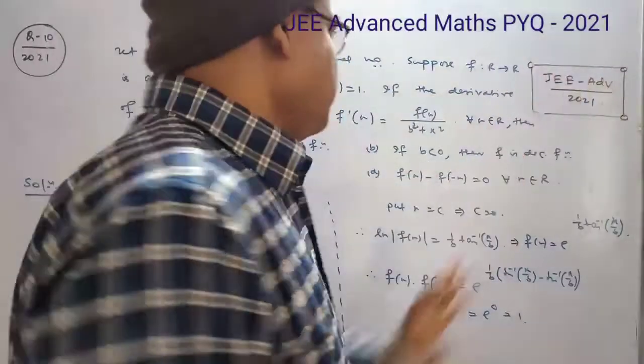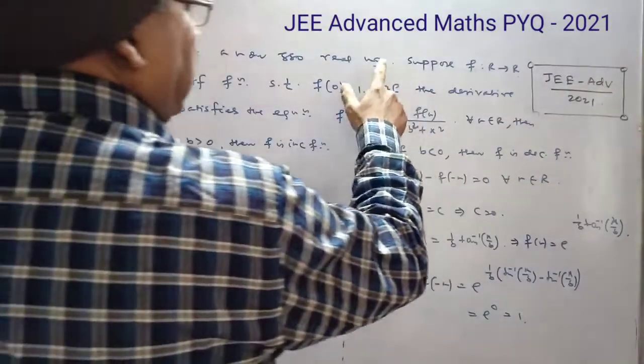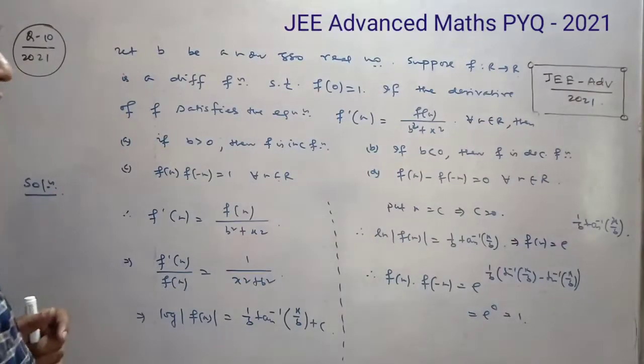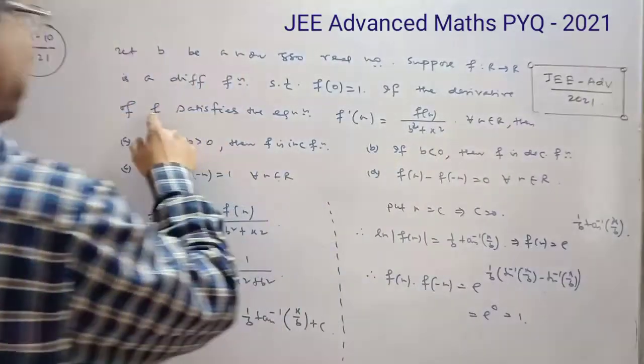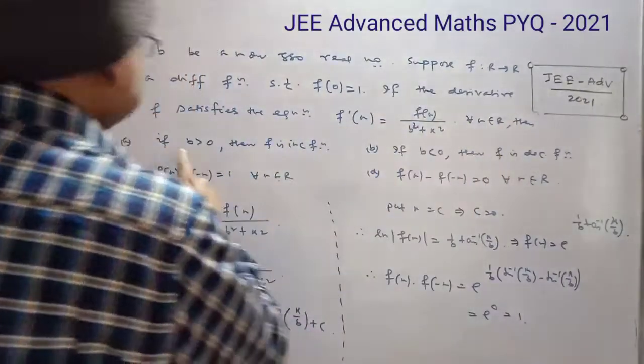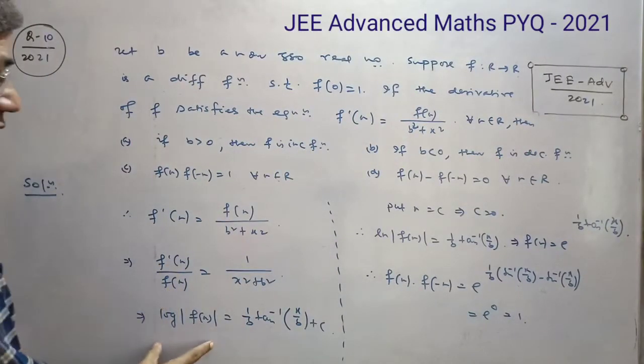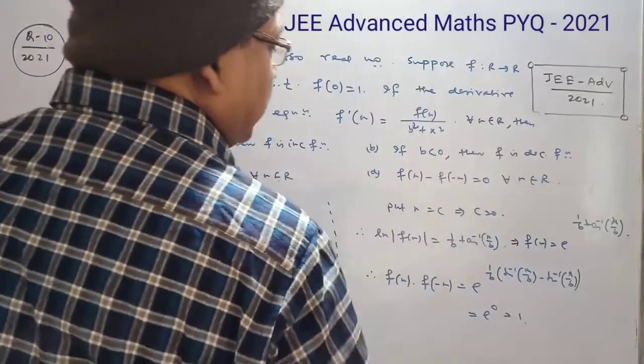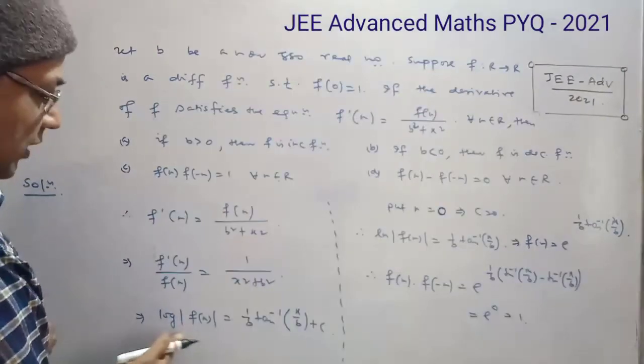Now the question is 2021 ka question. Given functions that f differentiable function such that f of 0 is equal to 1. If the derivative of these functions f satisfies these equations, then 4 options is there. Therefore this is square here. f dash x by f x is to integrate this. Now these conditions are given, when x is equal to 0, f of 0 is 1, log 1 is 0, then c value is 0.